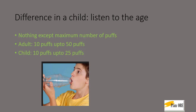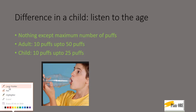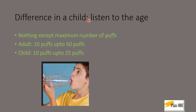An important point is the difference in dosages between a child and an adult. You always administer 10 puffs at a time for both. However, if the patient does not improve you can re-administer another set of 10 puffs. In an adult you can do this approximately 5 times — that's 50 puffs — but in a child the maximum is 2 and a half times, which is 25 puffs. So listen carefully to the age when the examiner gives you the scenario.